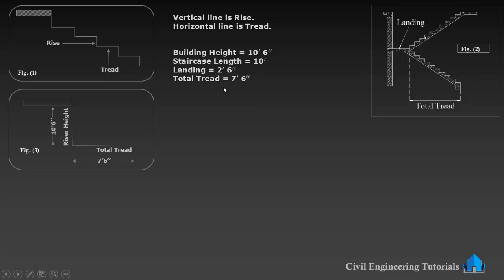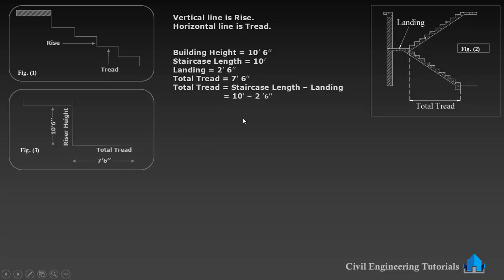Total tread equals staircase length minus landing. The staircase length is 10 feet and the landing is 2 feet and 6 inches. So 10 feet minus 2 feet 6 inches gives us 7 feet and 6 inches of total tread.